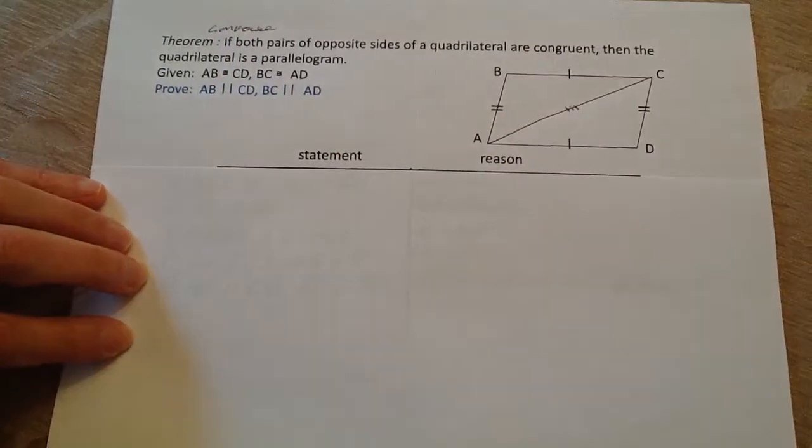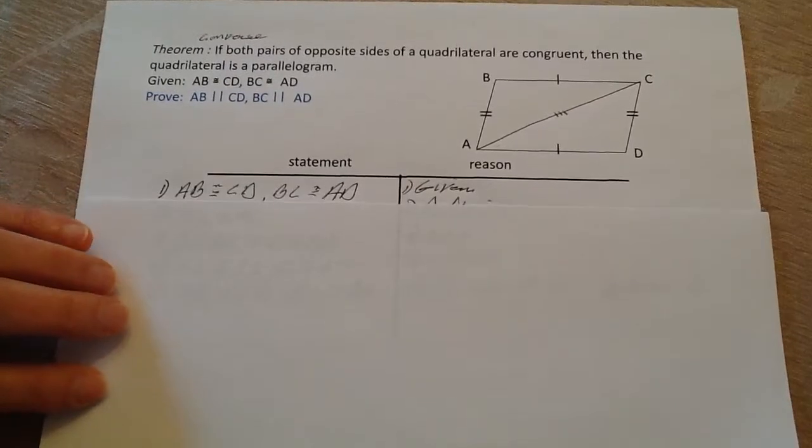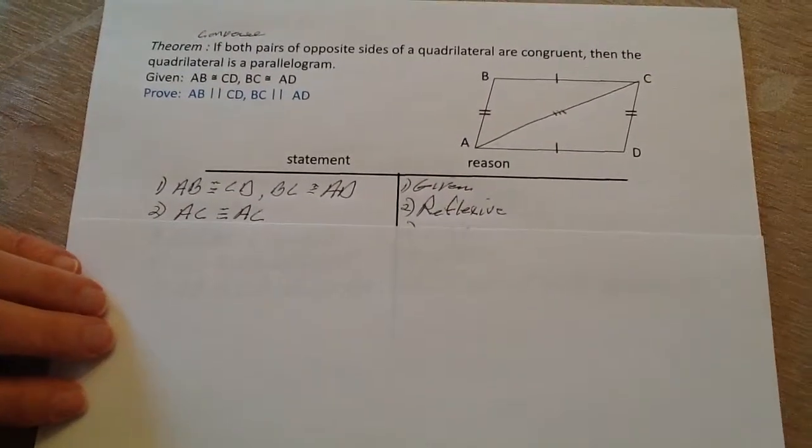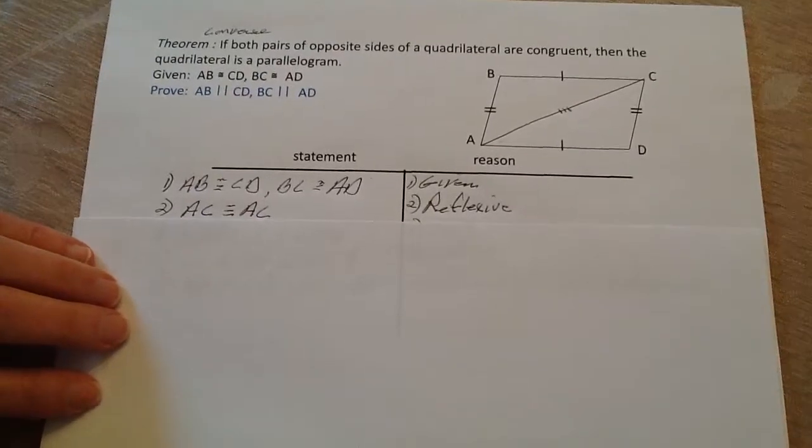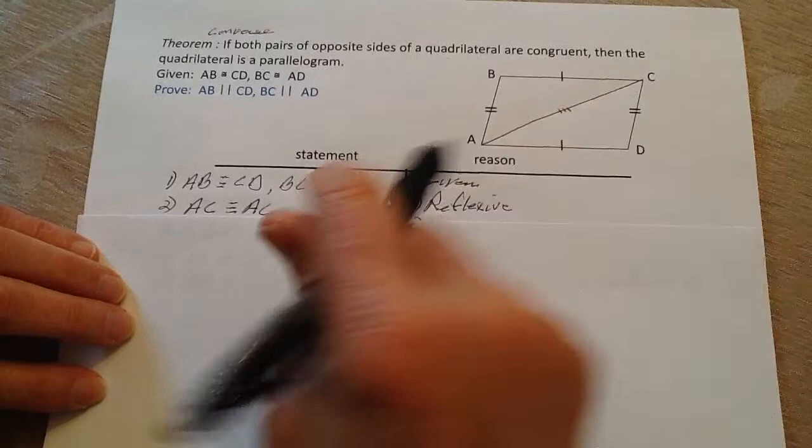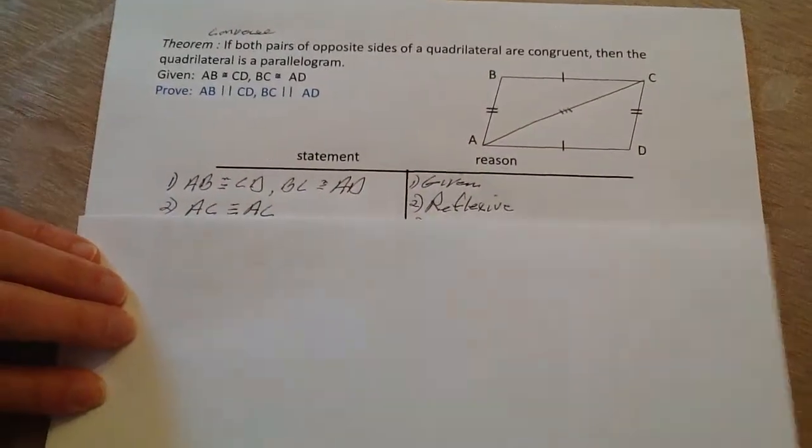First thing is I'll put down here our given, which is exactly what I already have here. Next, I'll go ahead and construct this line right here, AC, which is a diagonal. And of course, it's going to be congruent to itself because of the reflexive property.